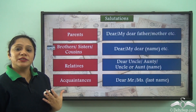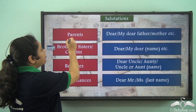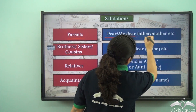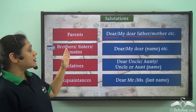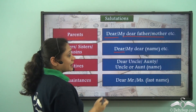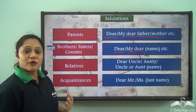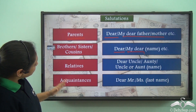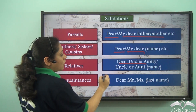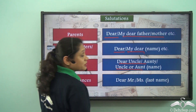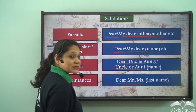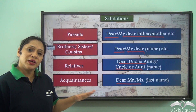Now let us look at a few salutations. For parents, we use 'Dear' or 'My Dear Father' or 'My Dear Mother.' For brothers, sisters, and cousins, we use 'Dear' with the name or 'My Dear' with the name. For relatives, we use 'Dear Uncle' or 'Dear Auntie,' or 'Dear Uncle/Aunt' with their name. For acquaintances, we use 'Dear' with the last name.